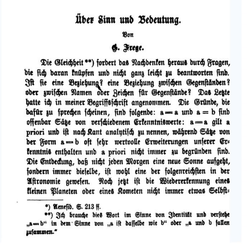Frege supposed that some parts of speech are complete by themselves and are analogous to the arguments of a mathematical function, but that other parts are incomplete and contain an empty place, by analogy with the function itself. Thus, "Caesar conquered Gaul" divides into the complete term "Caesar", whose reference is Caesar himself, and the incomplete term "conquered Gaul", whose reference is a concept. Only when the empty place is filled by a proper name does the reference of the completed sentence — its truth value — appear. This early theory explains how the significance or reference of a sentence depends on the significance or reference of its parts.